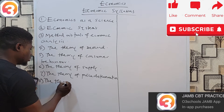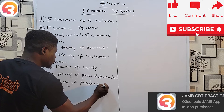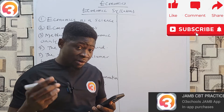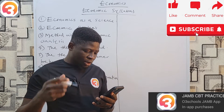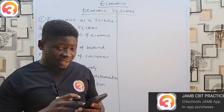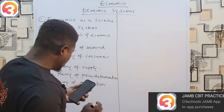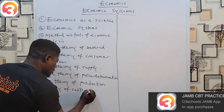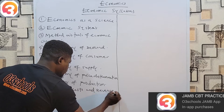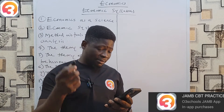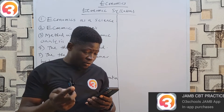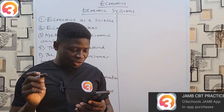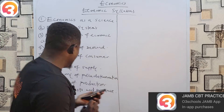Number eight is the Theory of Production. Under the theory of production, look at the meaning and types of production, concepts of production, division of labor and specialization, scale of production, production functions, and factors affecting productivity. Number nine is the Theory of Costs and Revenue. Under this, look at the concepts of cost, the concept of revenue, accountants' and economists' notions of cost, short-run and long-run cost, and the marginal cost and supply curve.